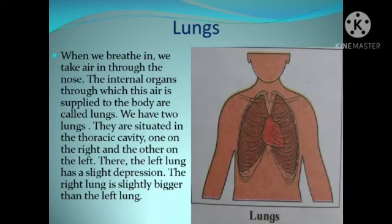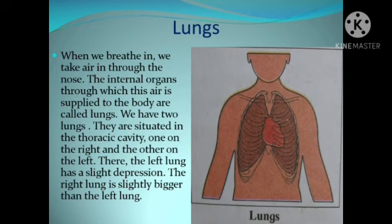Lungs. When we breathe in, we take air in through the nose. The internal organs through which this air is supplied to the body are called lungs. We have two lungs, situated in the thoracic cavity — one on the right and the other on the left. The left lung has a slight depression, and the right lung is slightly bigger than the left lung.